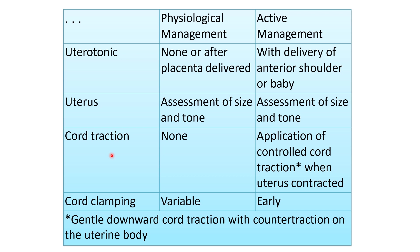Controlled cord traction means using one hand to apply traction over the cord to pull it out of the uterus, while the other hand is placed over the abdomen applying counter-pressure over the uterus. That is controlled cord traction.